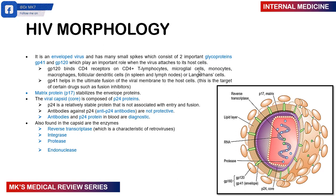The matrix protein P17 stabilizes the envelope. The viral core protein is P24 — it's a relatively stable protein, not associated with entry or fusion. Antibodies can be made against this protein, but remember these antibodies are not protective — they will not protect you against HIV. They are only important because we can use them diagnostically: we can screen for either the P24 antigen or antibodies in the blood. The enzymes are your RIPE: reverse transcriptase — characteristic of retroviruses — integrase, protease, and endonuclease, all of which are important in the life cycle of the virus.